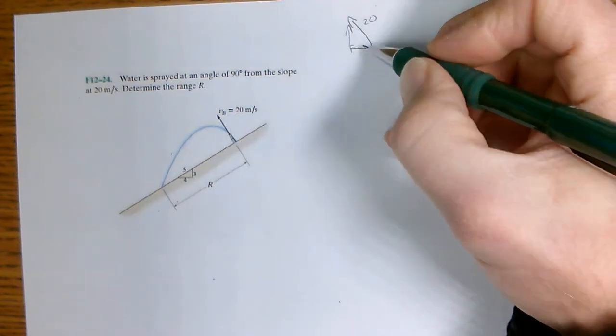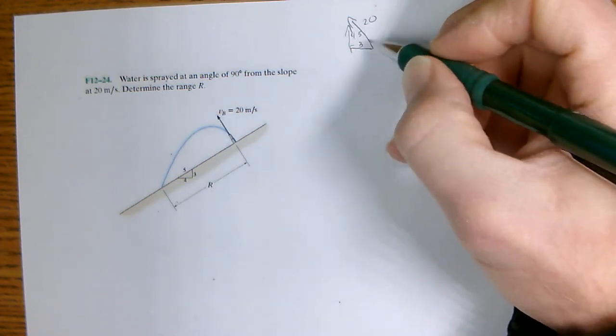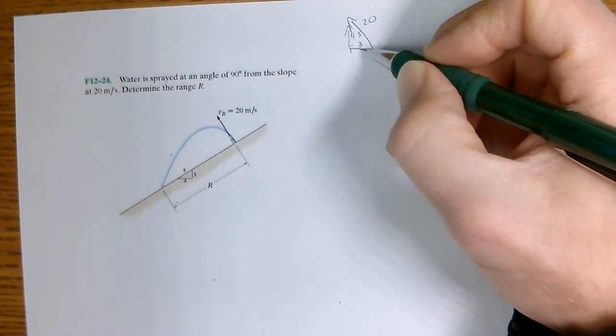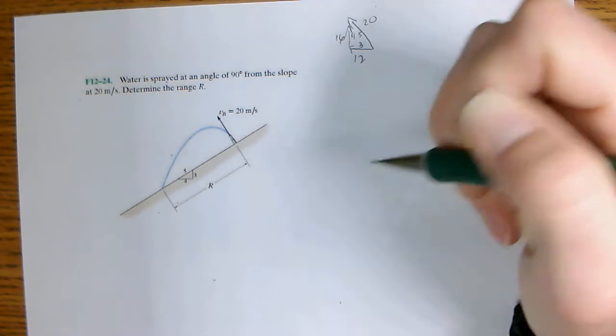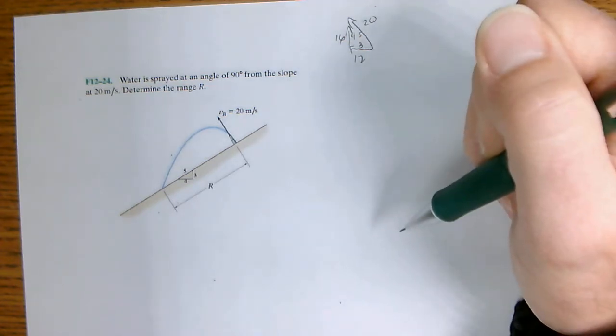So this would be a 3-4-5 triangle. So 20 divided by 5 is 4, times 3 is 12 and times 4 is 16. So the initial velocity is 12 in the X and 16 in the Y.